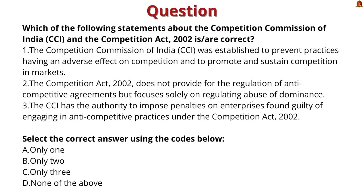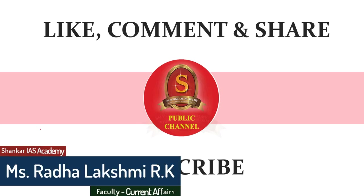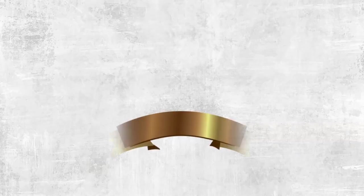A practice question: three statements are given and you have to identify which are correct. The first and third statements are correct, but the second statement is incorrect — the Competition Act 2002 regulates both anti-competitive agreements and abuse of dominance, making the second statement alone incorrect. The correct answer is option B. This concludes today's news article discussion. If you liked the video, hit like, comment, and don't forget to subscribe to Shankar IAS Academy's YouTube channel.